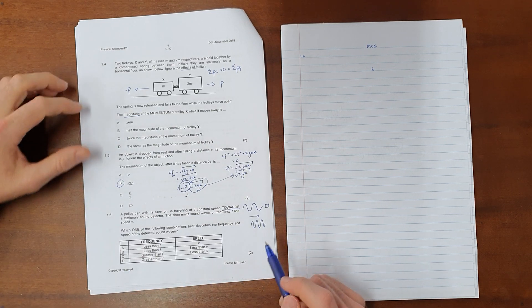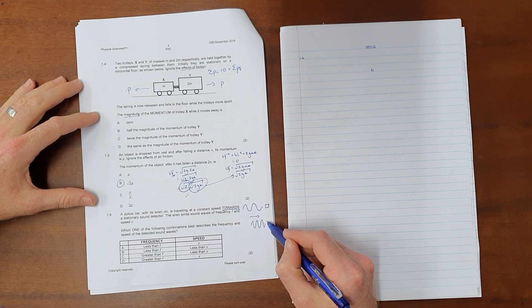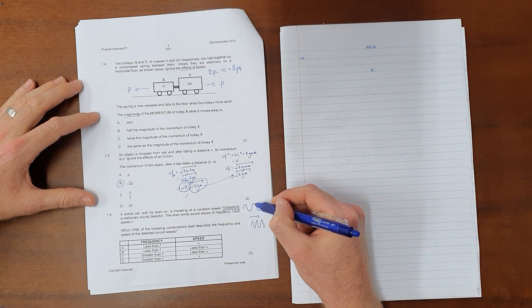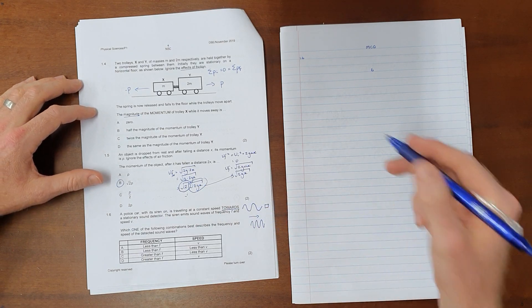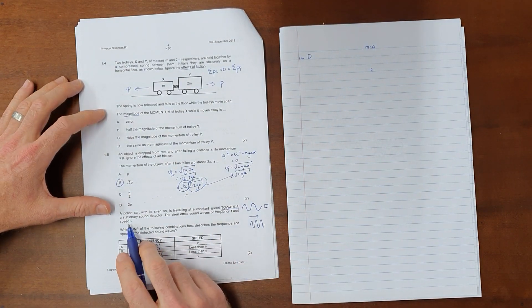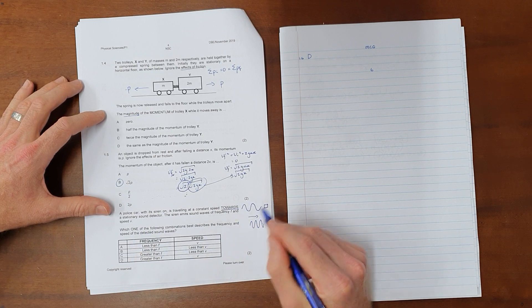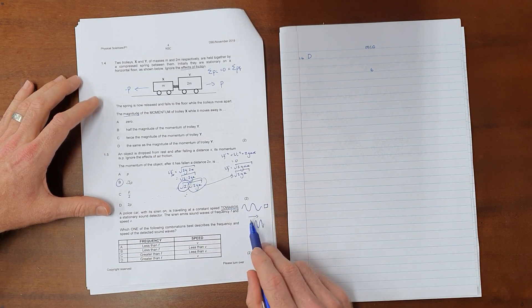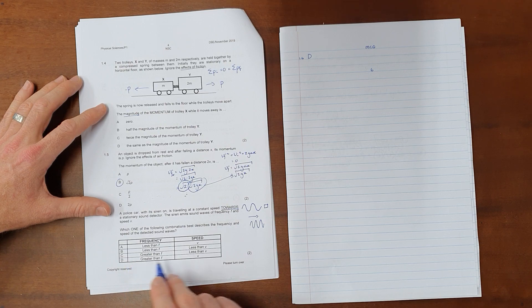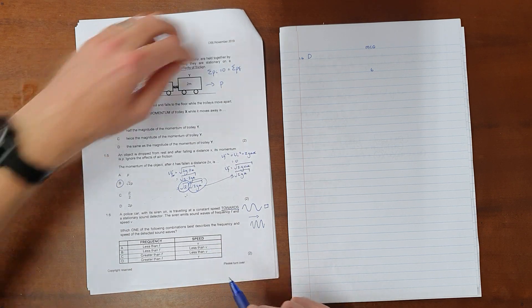Important here to note that this is only the detected frequency that changes. It does not mean that the frequency that is emitted actually changes. So the answer to question 1.6 is D. You will note that I prefer to read the question and then consider what the answer should be before moving on to the options, because the options can often be quite confusing and I encourage you to do the same.